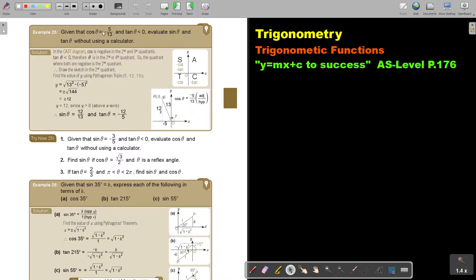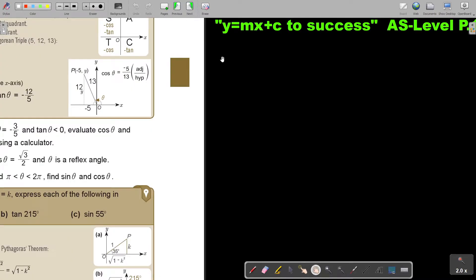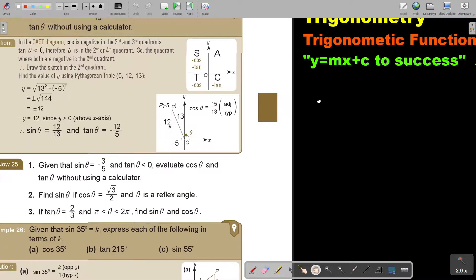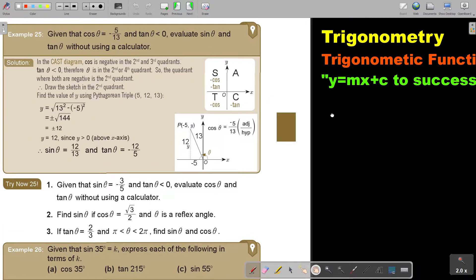Given that cos θ is negative 5 over 13 and tan θ is smaller than 0, so it's also negative, evaluate sin θ and tan θ without using a calculator. Let's make it a little bit bigger. Okay, let's stop here.